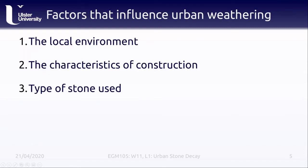Urban weathering is influenced by a number of different things, which we can broadly categorize into three factors. The first is the local environment, which determines the climate and the different types and amounts of pollutants in the air. The second is the characteristics of the construction — how the building is built, its shape, size, and texture of the surface. All of this has a say in how the stone will weather. And finally, the type of stone used is also very important, as different rocks and minerals are more or less susceptible to different types of weathering, in both natural and urban environments.